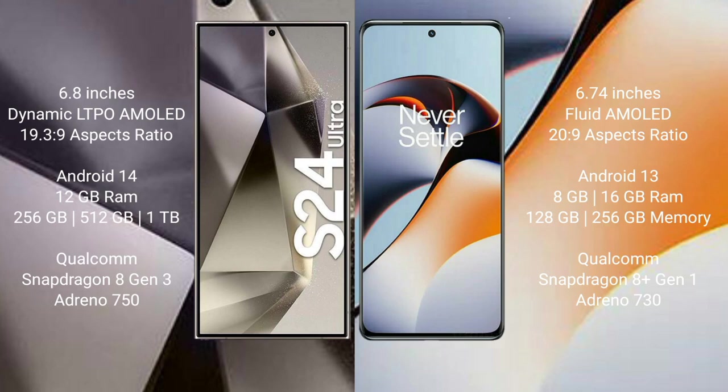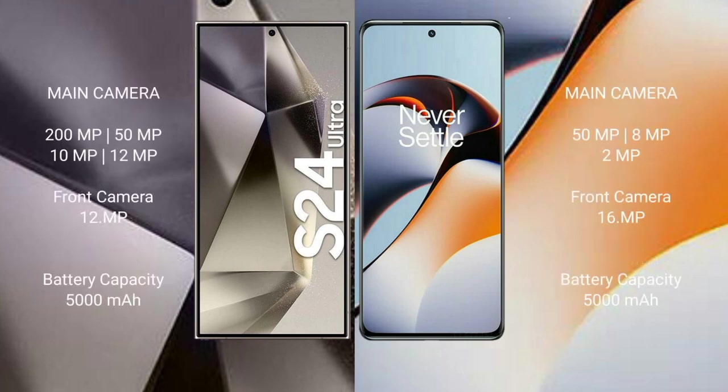OnePlus 11R runs on Android 14 operating system. Samsung Galaxy S24 Ultra comes with 12GB RAM and 256GB, 512GB, or 1TB internal storage, Qualcomm Snapdragon 8 Gen 3 processor and GPU Adreno 750. OnePlus 11R comes with 8GB, 12GB, or 16GB RAM and 128GB, 256GB, or 512GB internal storage, Qualcomm Snapdragon 8 Gen 1 processor and GPU Adreno 730.